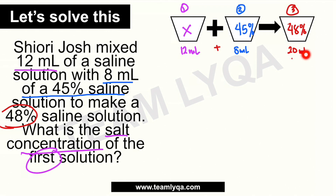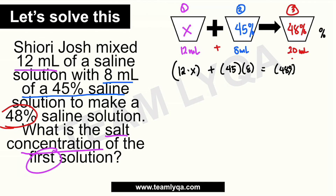Tapos, isusulat na natin yung equation natin. I-multiply natin ito — yung first bucket. So you have 12 times x as the first bucket plus yung 8 ml na 45%. So pwede mo siyang i-multiply like this — 45 times 8. You can use 0.45 kasi percentage siya, pero I prefer na i-whole number siya, tapos sa final na answer ko na lang ilalagay yung percentage. Equal daw ito sa 48 times — dahil hindi nga natin lalagay yung percentage — 48 na lang, times 20 ml.